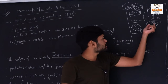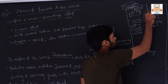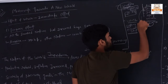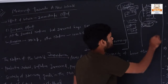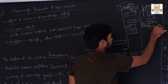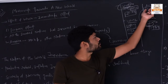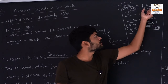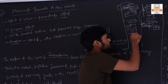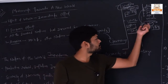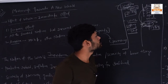USSR did not expect this type of attack from Germany because a non-aggression treaty had been signed between Germany and USSR in 1939. That is why the USSR did not expect this type of attack. But Germany broke that treaty and attacked on USSR, which was considered an important cause that led to World War 2.